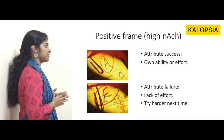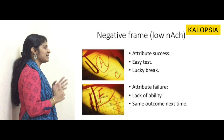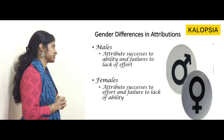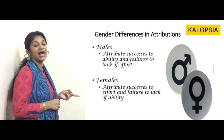People with low motivation tend to attribute success to an easy test or a lucky break, and attribute failure to lack of ability, expecting the same outcome next time. Regarding gender differences in attributions: males tend to attribute success to ability and failures to lack of effort, while females tend to attribute success to effort and failure to lack of ability.